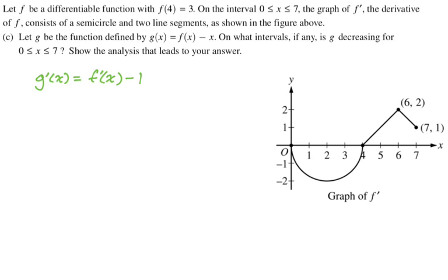So if g of x is decreasing, I would need g prime to be less than 0. So I need to figure out what's going on there. G prime is less than 0 would mean that f prime is less than 1. So now I need to look at the graph and figure out where f prime is less than 1. So if I go to the graph, I'm going to add in the line at y equals 1. Because I have the graph of f prime, I just need to know where this graph is less than 1. And now I can visually see it.